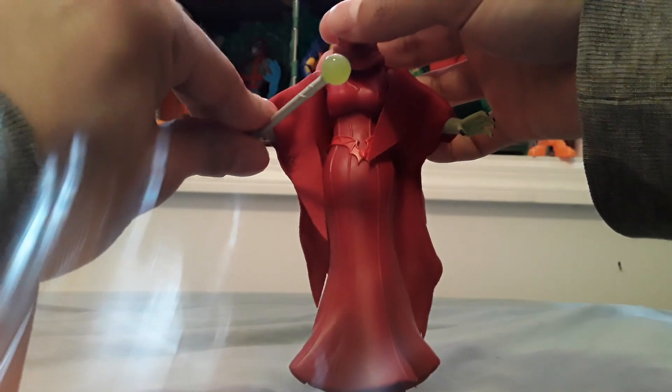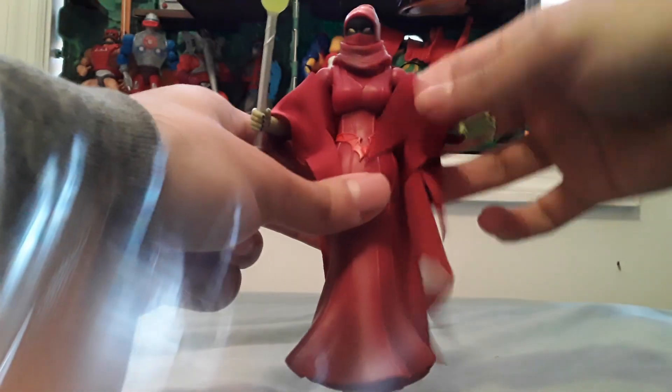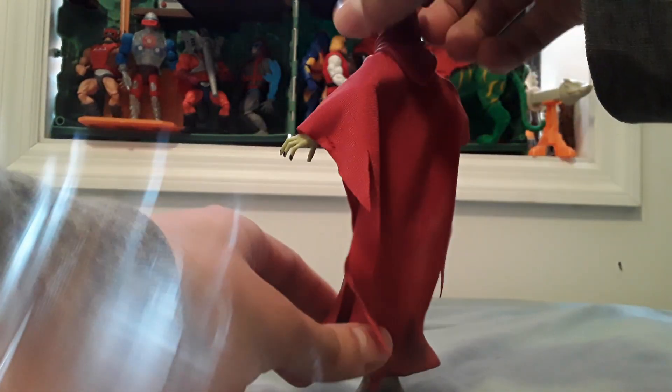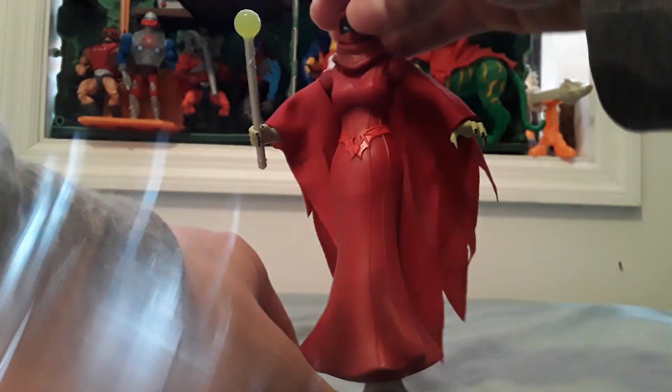This is her wand or scepter. And it's highly posable and comes with this little black sand, clear, translucent black sand.